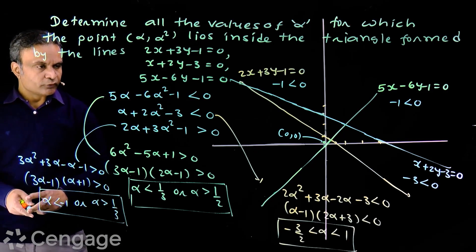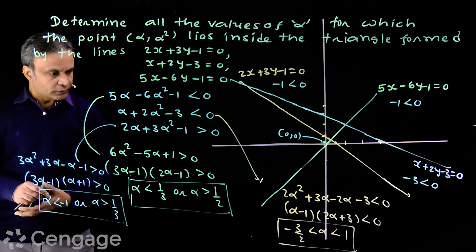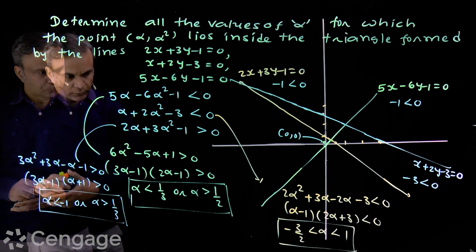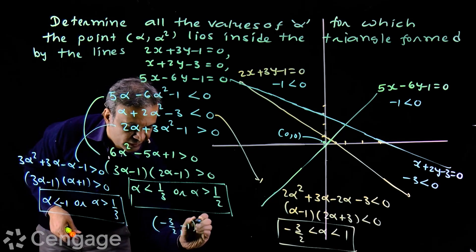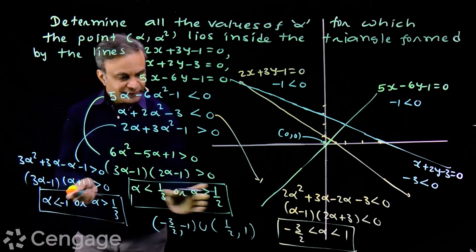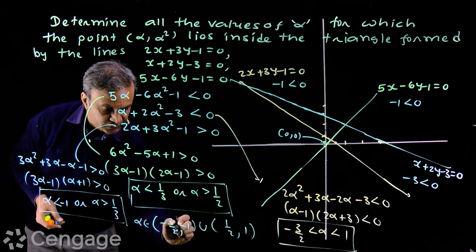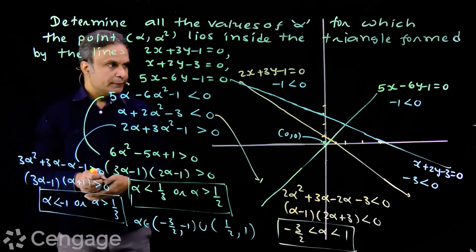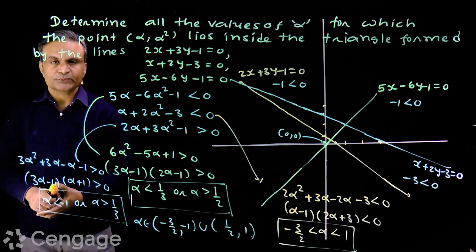Now we want all three conditions satisfied simultaneously, so we look for the common values across all three solution sets. The common values are α ∈ (-3/2, -1) ∪ (1/2, 1). We solve this question by plotting the straight lines on the coordinate plane and using the origin as a reference.